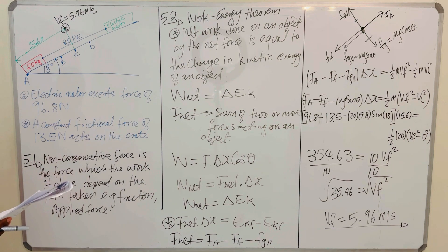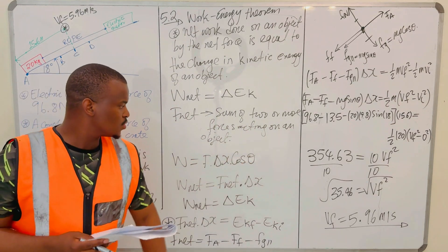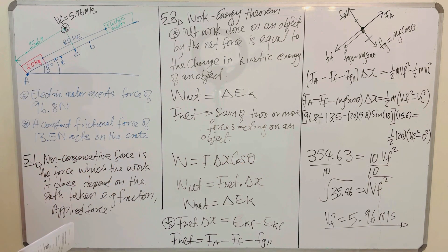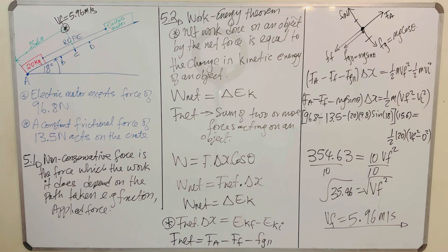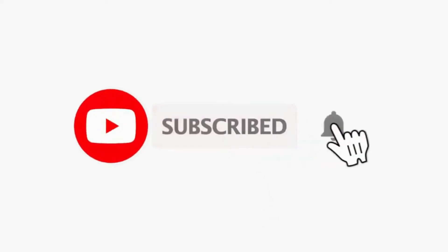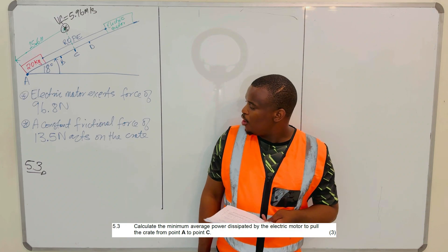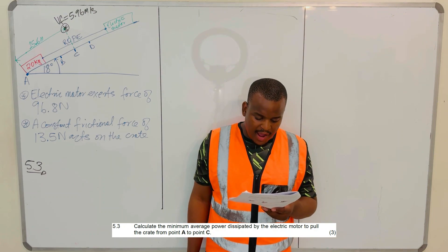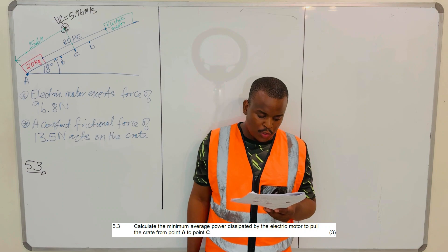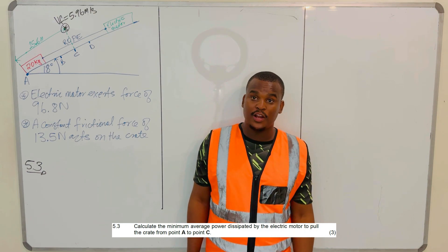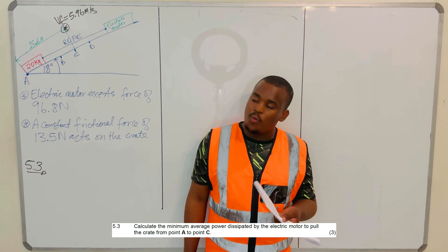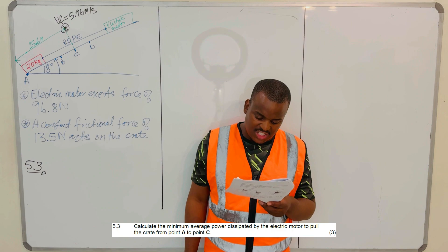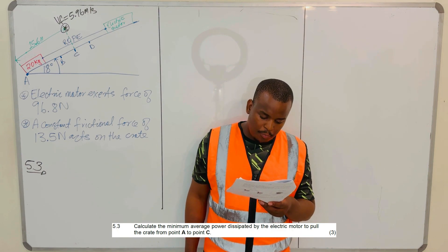Moving to question 5.3: calculate the minimum average power dissipated by the electric motor to pull the crate from point A to point C. Power is the rate at which work is done. It can be expressed as P = F × v_average, since W = F × Δx and dividing by time gives F × (Δx/Δt) = F × v_avg.